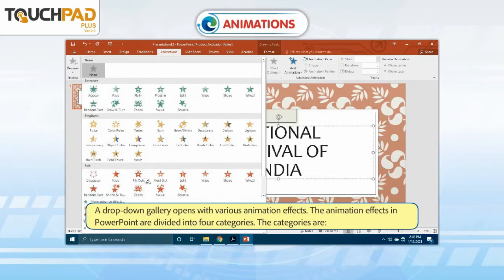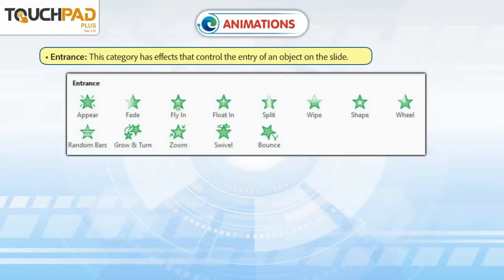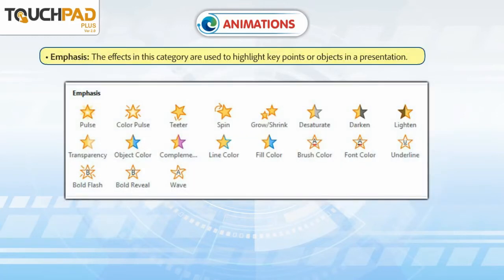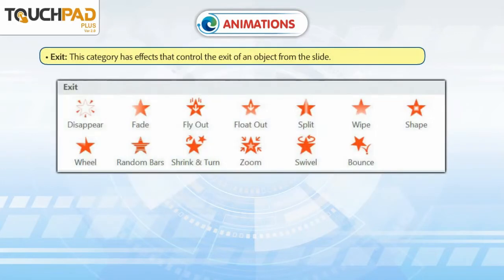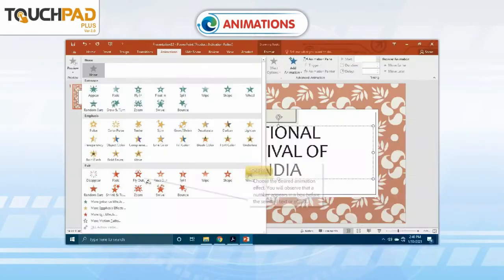The animation effects in PowerPoint are divided into four categories. Entrance: this category has effects that control the entry of an object on the slide. Emphasis: the effects in this category are used to highlight key points or objects in a presentation. Exit: this category has effects that control the exit of an object from the slide. Motion Paths: this effect is like the emphasis effect, but the object moves within the slide along a path or a pattern, such as a circle or a square.